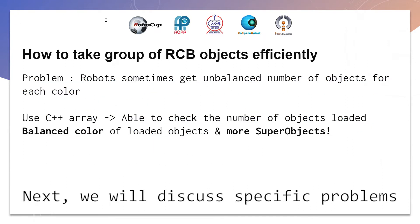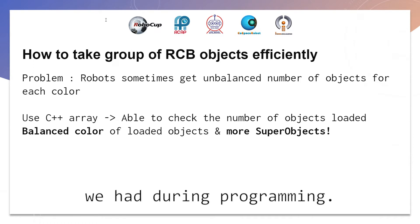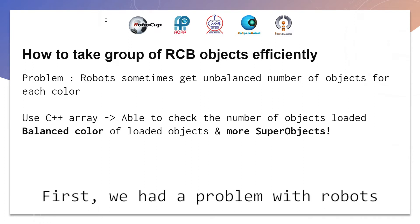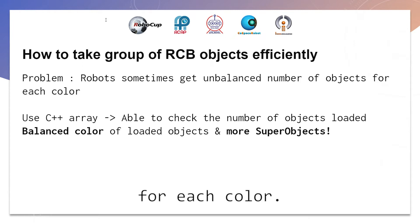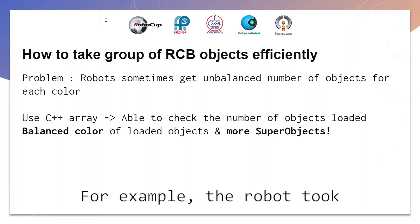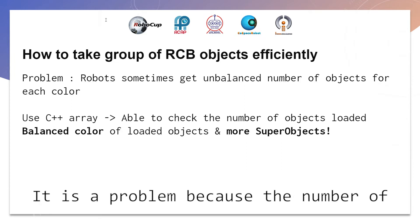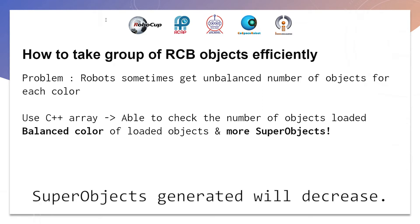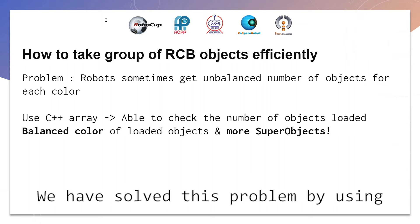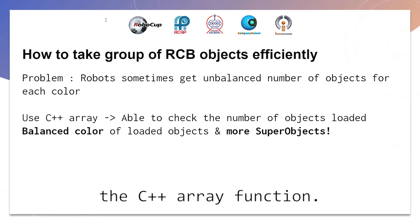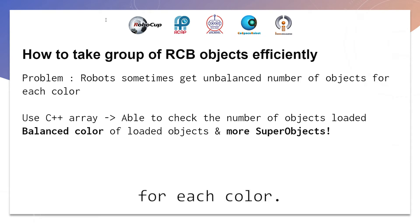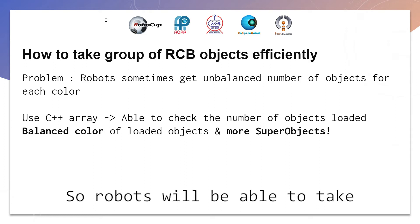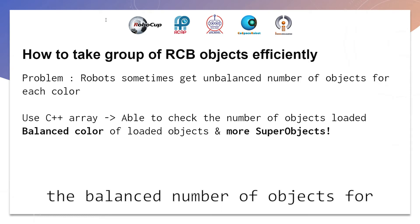Next, we will discuss specific problems we had during programming. First, we had a problem with the robot getting an unbalanced number of objects for each color. For example, the robot took five red objects. This is a problem because the number of super objects generated will decrease. We solved this by using the C++ ID function, which allows robots to check the number of objects loaded for each color, so robots can take a balanced number of objects for each color.